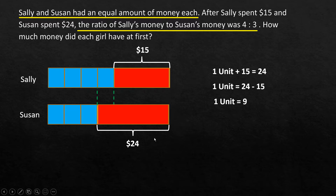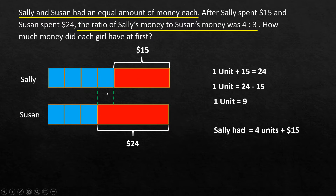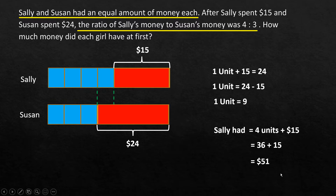The question asks how much money each girl had at first. Since they had equal amounts, finding Sally's initial amount answers it. Sally had 4 units plus $15. We represent that as 1, 2, 3, 4 units plus $15. One unit equals $9, so 4 times 9 is 36, plus 15 equals $51.